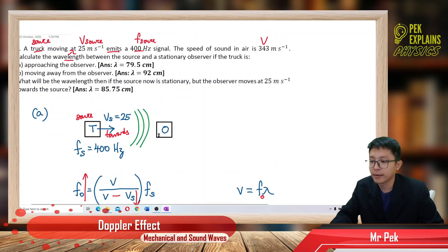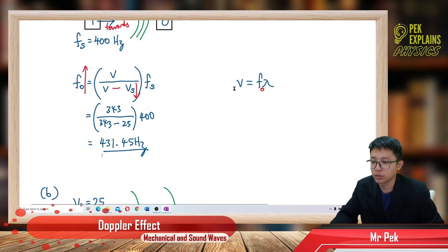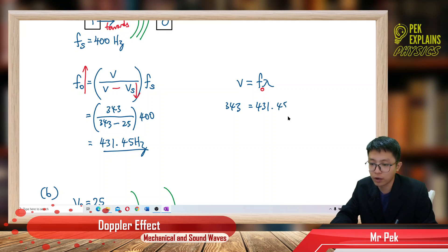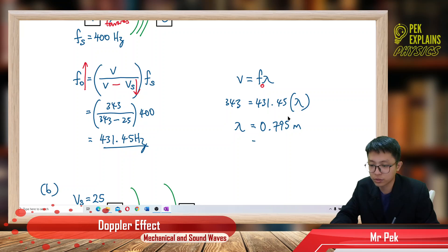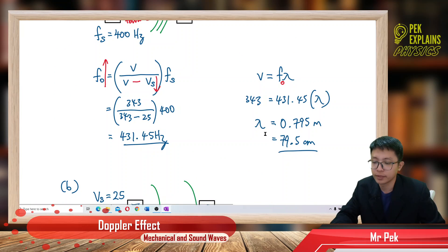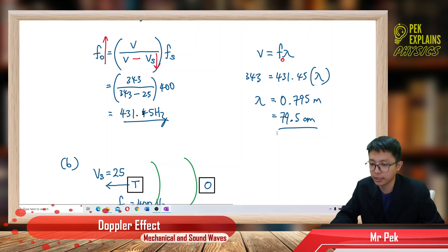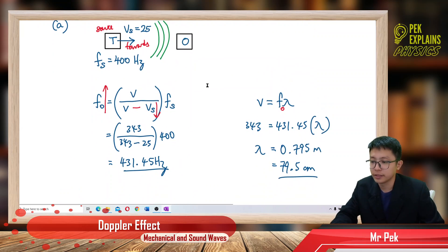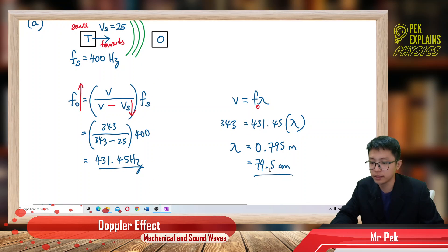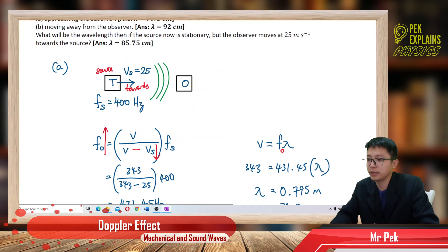Now I want to find the wavelength. The speed of sound is still 343, but the observed frequency is 431.45 hertz. So the wavelength is 0.795 meter, which is also 79.5 centimeters. This is the wavelength of the higher observed frequency — the wavelength is being compressed when the source moves towards the observer. So lambda is 79.5 centimeters.